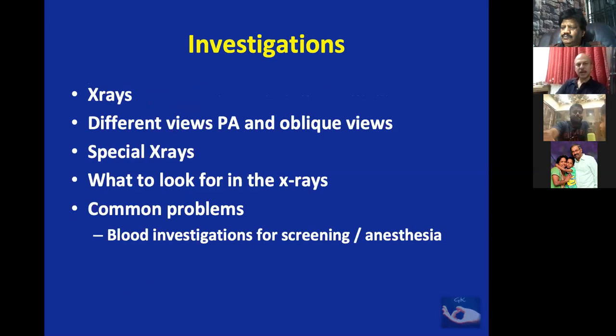The basic investigation is an X-ray — we ask for PA and oblique views. Special X-rays include stress X-rays on the thumb metacarpophalangeal joint to look for skier's thumb or injury to the ulnar collateral ligament of the MCP joint. We look for fractures, dislocations, and soft tissue injuries. Blood investigations are also done for screening and anesthesia purposes.